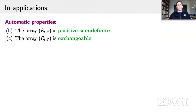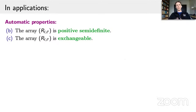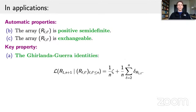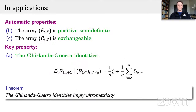In applications, properties B and C — that the array is positive semi-definite and exchangeable — will be automatic, built into the definition of the overlaps in spin glass models. The key property will actually be the Ghirlanda-Guerra identities. So the main message of this result is that the Ghirlanda-Guerra identities imply ultrametricity of the overlaps.